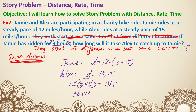Setting the distances equal: 12 times (3 plus T) equals 15T. Expanding gives 36 plus 12T equals 15T. Subtracting 12T from both sides gives 36 equals 3T, then dividing by 3 gives T equals 12 hours. So Alex travels for 12 hours before catching up to Jamie, at which point Jamie would have traveled for 15 hours total. Thank you.